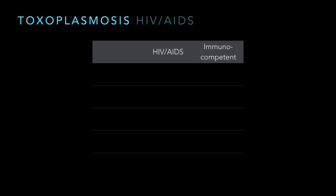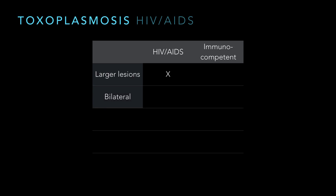Let's compare toxo between a person with HIV/AIDS and somebody who's immunocompetent. Which has larger lesions? A third of HIV/AIDS toxo lesions are greater than five disc areas in size. Which is more likely to be bilateral? This is a bit of a trick question — the book says 40% for HIV/AIDS. But for immunocompetent folks there's the congenital category. Studies from researchers in Brazil have shown that a lot of cases that appear congenital are actually acquired more than we thought. So the jury's out on bilaterality.